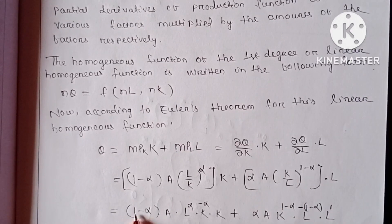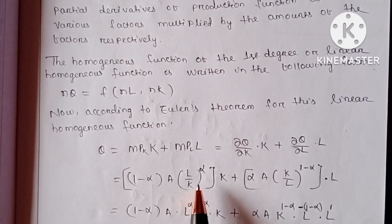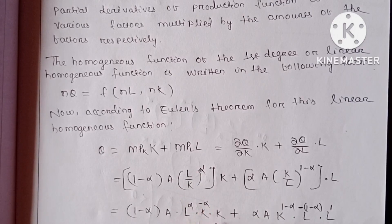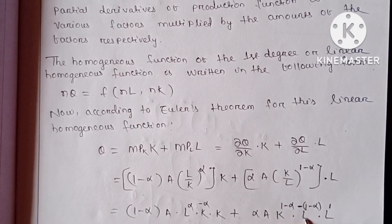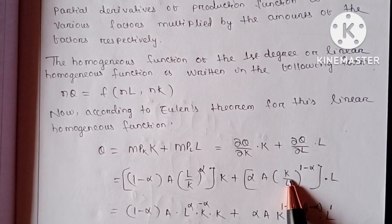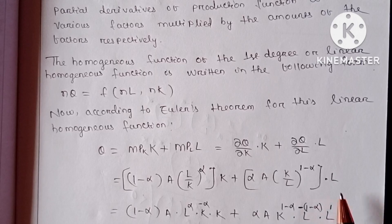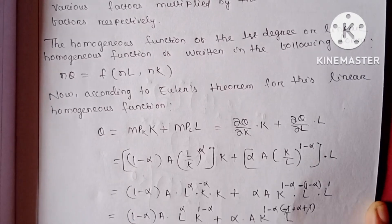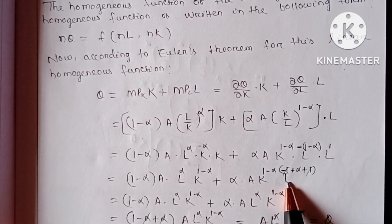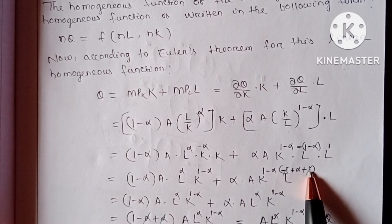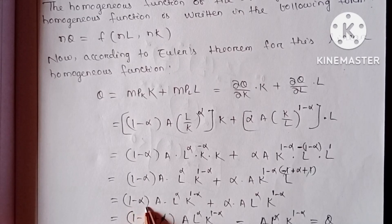Substituting, we get (1 minus alpha) into A, L to the power alpha, into K to the power minus alpha — by taking K into the numerator this power becomes negative — into K, plus alpha into A, K to the power (1 minus alpha), into L to the power minus (1 minus alpha). By rearranging, the minus one and plus one powers cancel, giving us (1 minus alpha)·A·L^alpha·K^(1−alpha) plus alpha·A·L^alpha·K^(1−alpha).